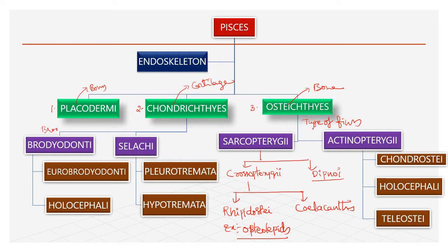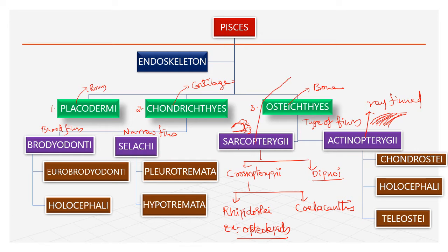In Sarcopterygii, they have broad fins, whereas in Actinopterygii they have narrow fins. In Sarcopterygii the fin is lobed — these are lobe-finned fishes, with the fin present on a lobe. Whereas in Actinopterygii it is ray-finned — the fins have rays made up of either cartilage or bone.